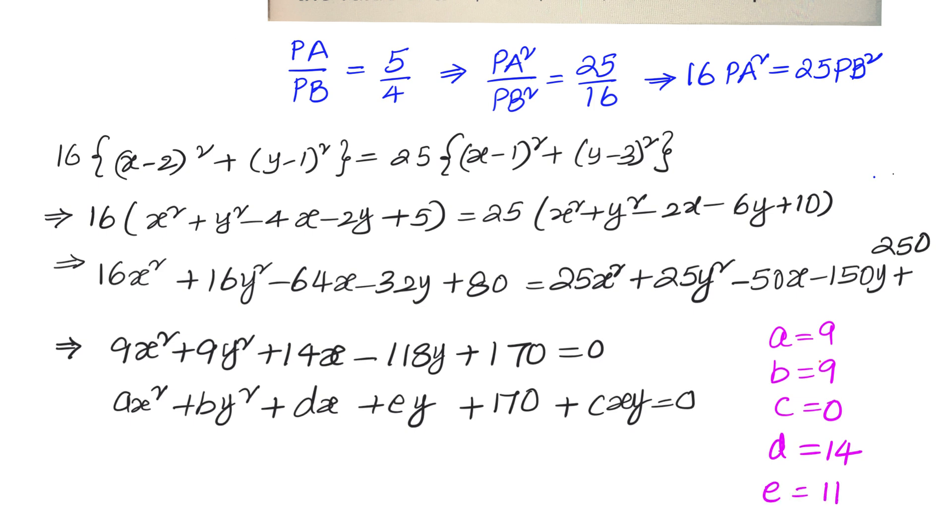We need to find a² + 2b + 3c + 4d + e. Let us substitute: a² + 2b + 3c + 4d + e = (9)² + 2(9) + 3(0) + 4(14) + (-118).